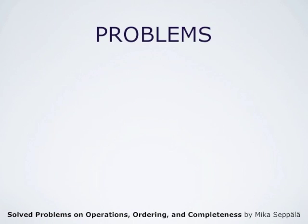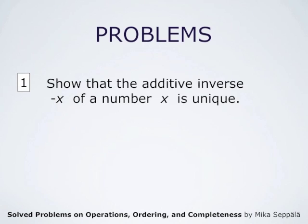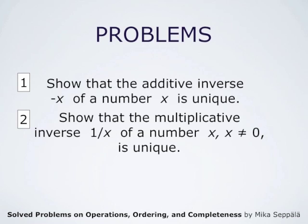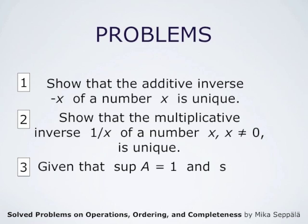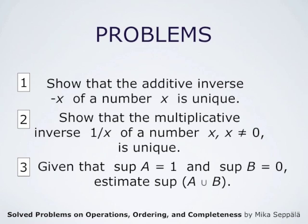We discuss three problems in this video. The first one is to show that the additive inverse of a number is unique. Secondly, we have to show that the multiplicative inverse is unique, using the properties of these operations. The third problem asks us to estimate the supremum of the set A union B, given that supremum of A is 1 and supremum of B is 0.